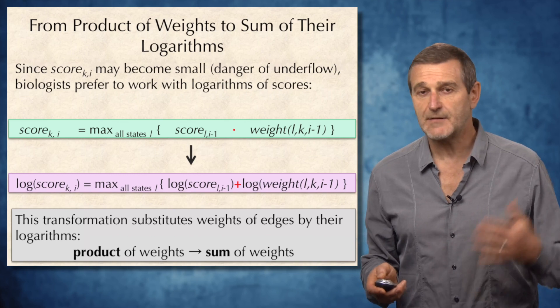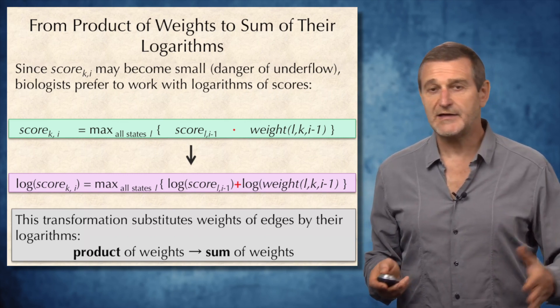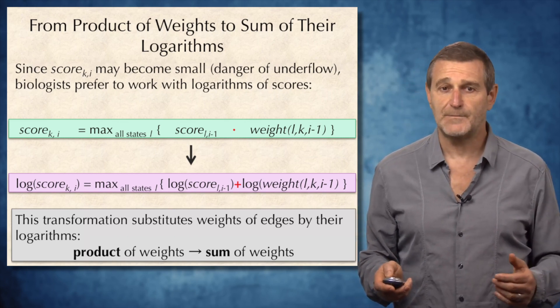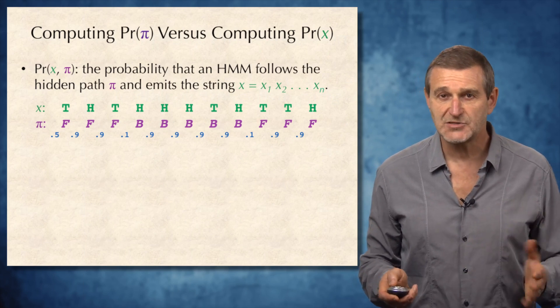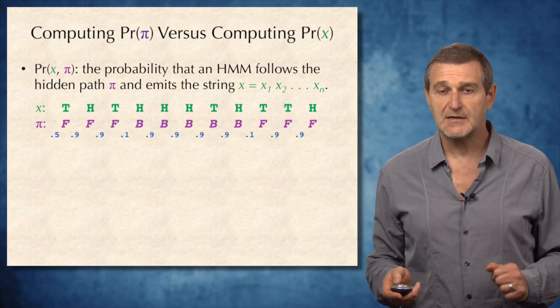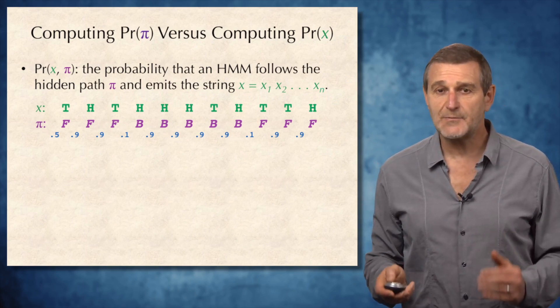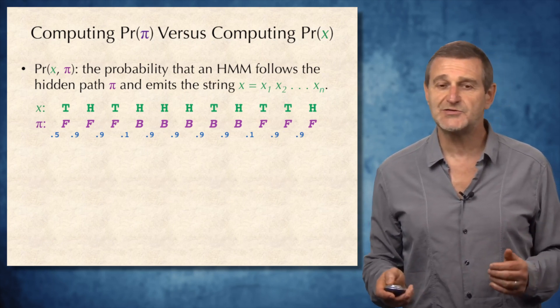So there is no difference between computing optimal solution in the decoding problem and the traditional longest path in the graph, something that we studied before. Note that we have already learned how to compute probability of the hidden path pi, and it turned out to be easy. It amounts simply to multiplication of transition probabilities. And our intuition tells us that probably it will be equally easy to compute the probability of the emitted sequence x. Let's see whether our intuition is correct.